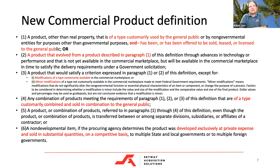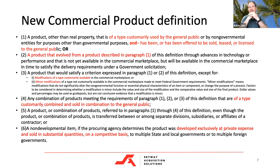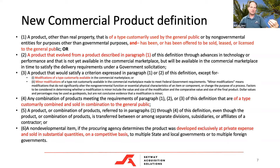This first one is the definition of a commercial product — basically a product other than real property of a type customarily used by the general public. That language is not new. It goes on to say it has been, or has been offered to be, sold, leased, or licensed to the general public. Something either currently being sold to the general public or offered to be. That's not new.